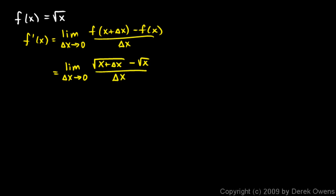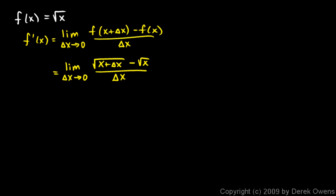Now, if we just substitute delta x as zero here, we get zero over zero. And so we can't take the limit — we need to try to simplify this. The way to simplify this is to look at this expression involving the radicals and multiply by the conjugate of that.